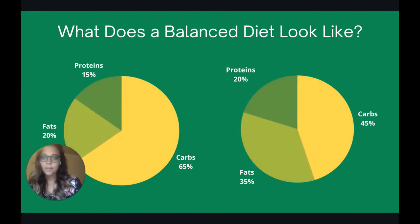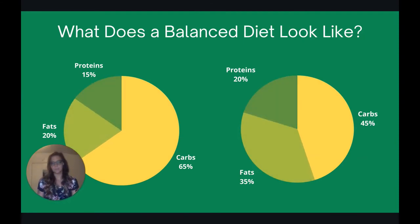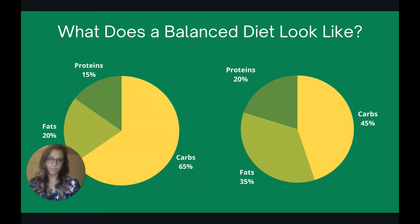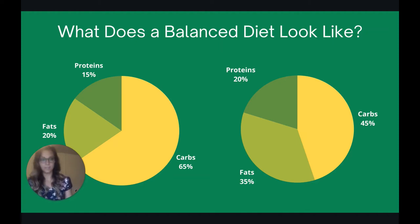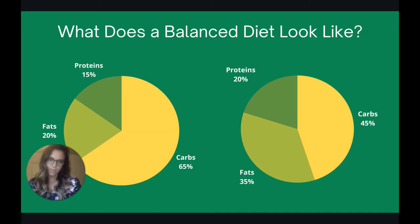So first, what does a balanced diet look like? A balanced diet is made up of three components called macronutrients, and this includes carbohydrates, proteins, and fats. Now there's not really a one-size-fits-all for how much of each one each person needs — it's going to be unique for every individual, but there are recommended ranges of each that you should consume.